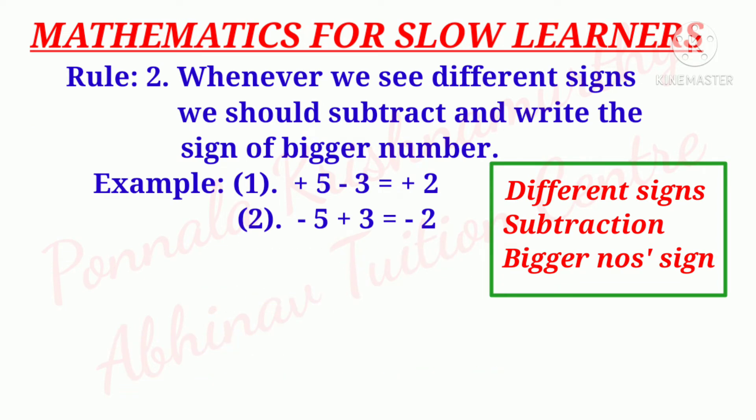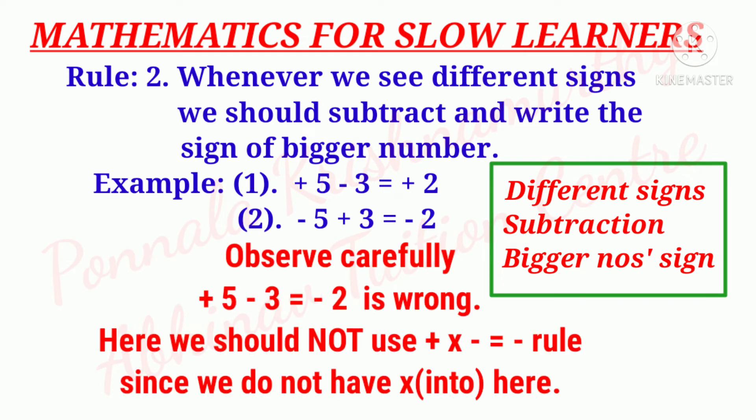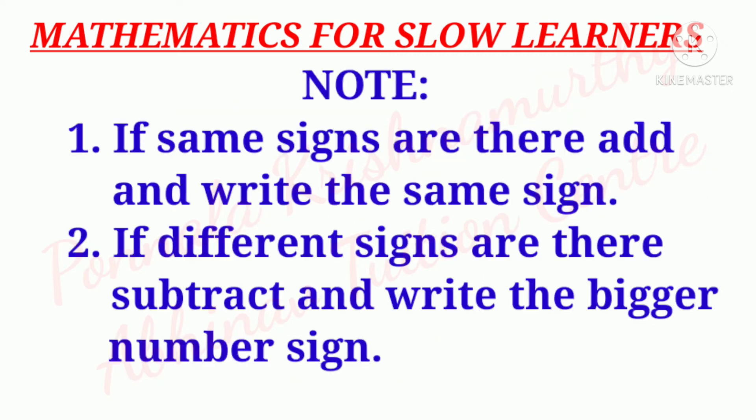Observe carefully: plus 5 minus 3 is equal to minus 2 is wrong. Here we should not use the plus into minus is equal to minus rule, since we do not have 'into' here.